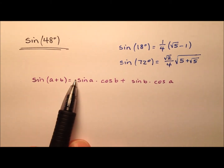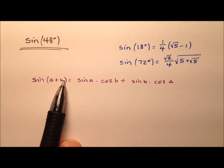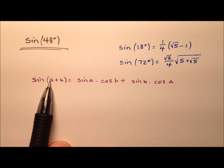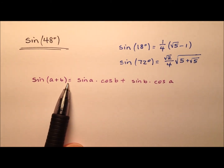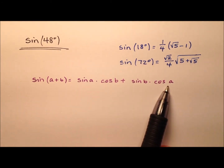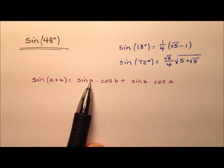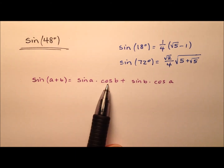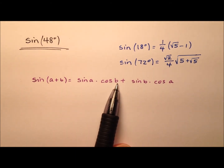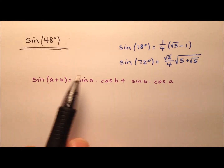So what this identity says is: the sine of two angles a and b, where we're adding them, can be expanded as the sine of the first angle a times the cosine of the second angle b, plus the sine of b times the cosine of a.